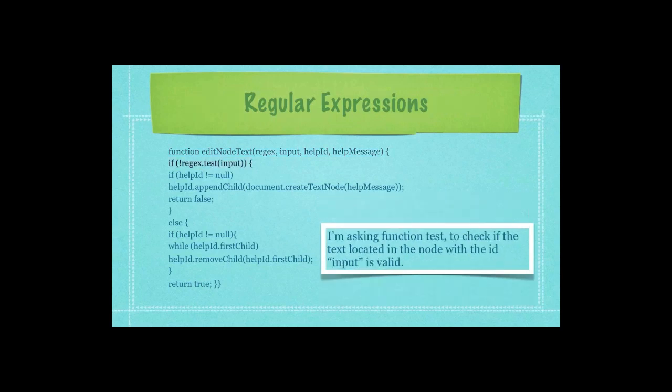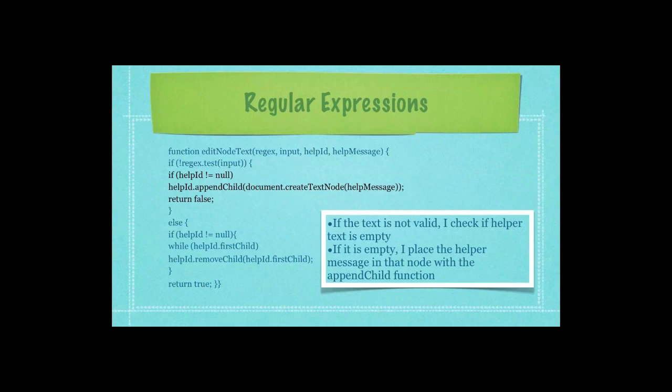The identification number for the text I will be changing, and the text I will be adding to the helper text node. Here, in the highlighted text in black, I'm asking function test to check if the text located in the node with the identification name input is valid. Here, if the text is not valid, I check if helper text is empty, meaning that the text in the helper text node is empty. If it is empty, I place the helper message in that node with the append child function.